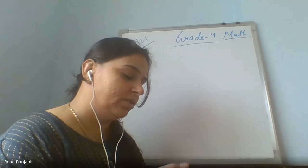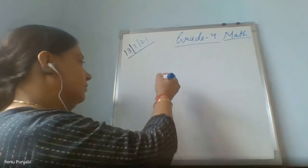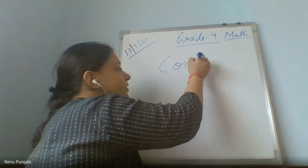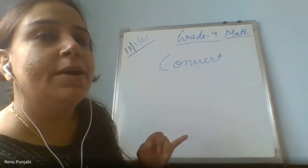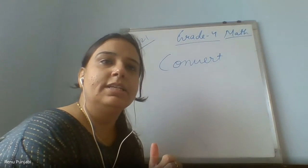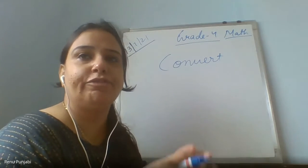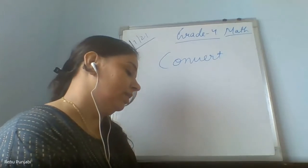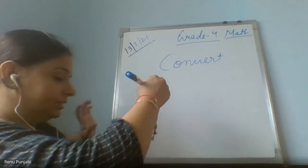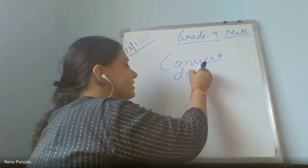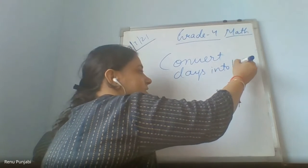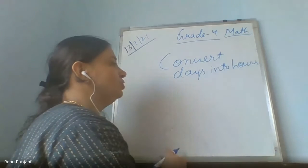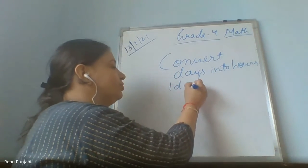Today we are going to learn how to convert timings. Convert means — we have learned conversion in meters and kilometers. When we are converting from one unit to another unit, it is known as conversion. For example, if we are going to convert days into hours — we know one day equals 24 hours.